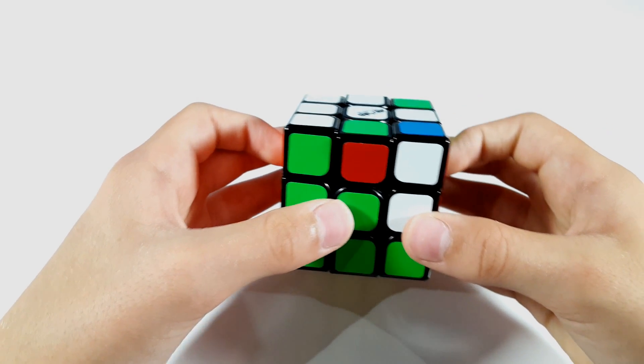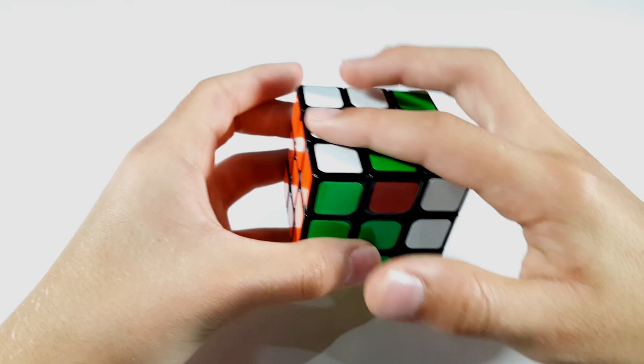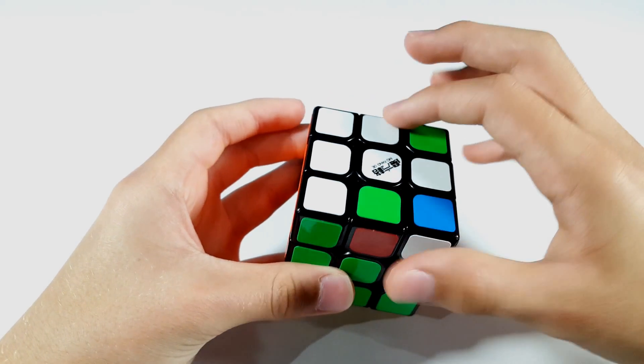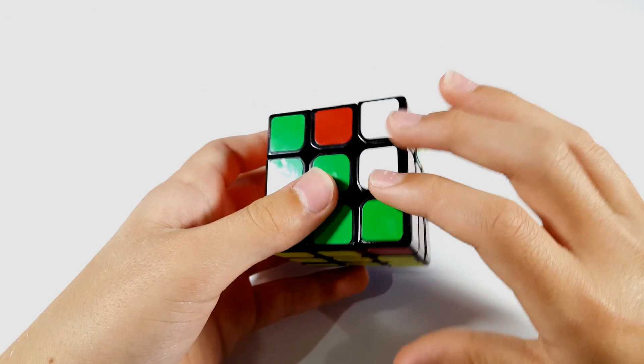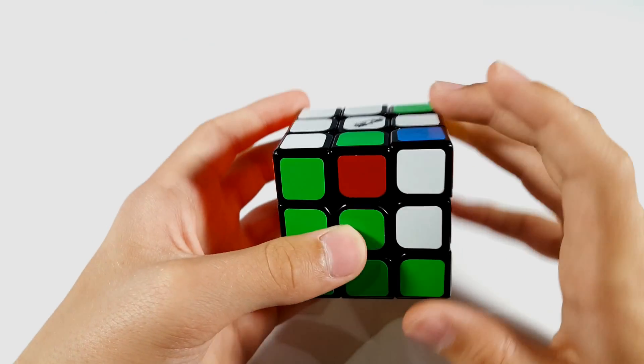So here is the case right here. You can recognize it by seeing this T-shape right here and then just this extra edge in back. Also noting you have this block right here in front.